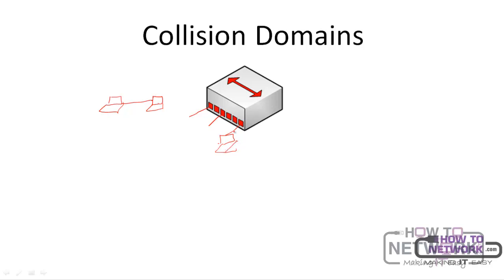This means that when the first device is trying to send a message to the second device and the second device is trying to send a message to the third device at the same time, they can experience a collision because it's all a single collision domain. So regardless of the number of devices connected to the hub, you must send messages one after the other, otherwise you will experience a collision.